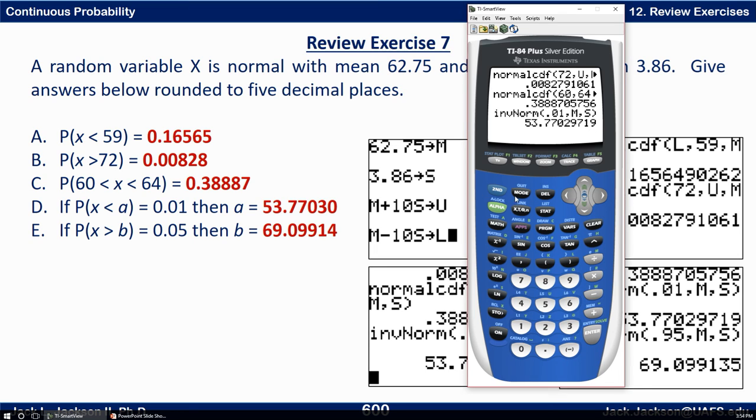The only wrinkle on E is when I do this, I don't want to put in 0.05. I want to do one minus 0.05, or if I do that in my head, that's 0.95. Work that out, and there we get it.